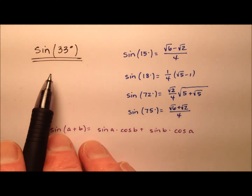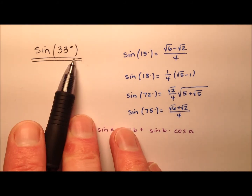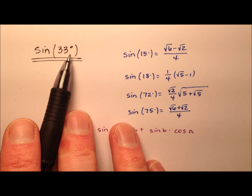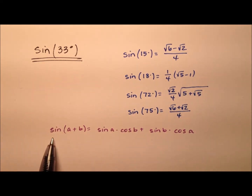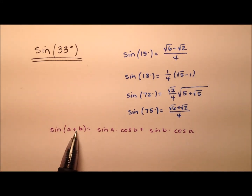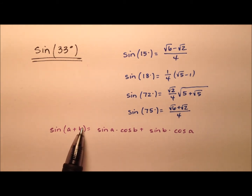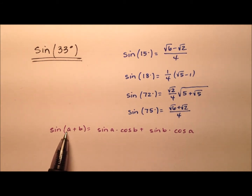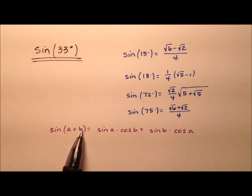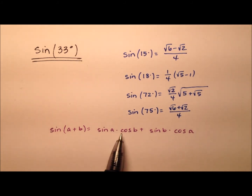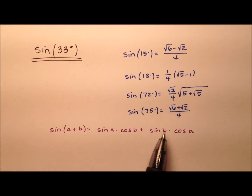In this video, I want to walk through and show you how we can find the exact value for the sine of 33 degrees. We're going to do so using the sum identity for sine, which says the sine of the sum of two angles a and b can be expanded as the sine of a times cosine of b, plus sine of b times cosine of a.